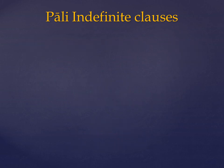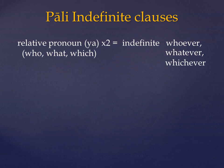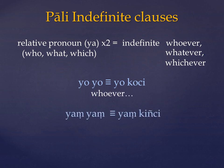Another way of creating the indefinite whoever is to repeat the relative pronoun twice. So if you see the term yo-yo, that's equivalent to yo-kochi, whoever. And yang-yang is equivalent to yang-kinci, whatever. This is actually an example of a general rule in Pali — repeating any term can intensify that term, in a sense giving it the meaning very much so. And when a pronoun is repeated, it means they express a broader, more general meaning, which in practice makes them indefinite.